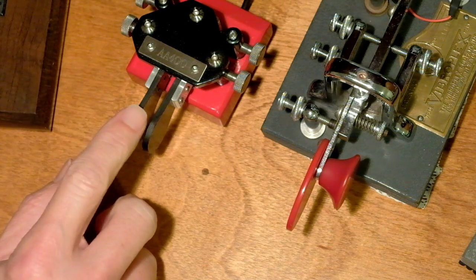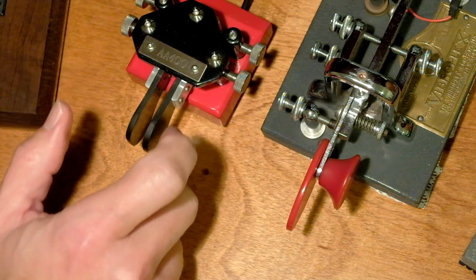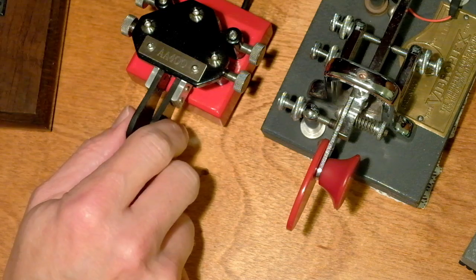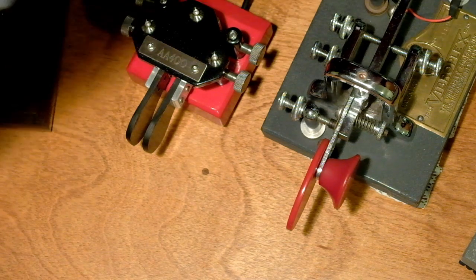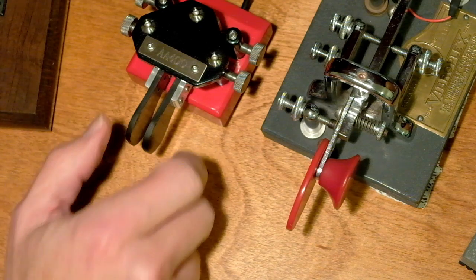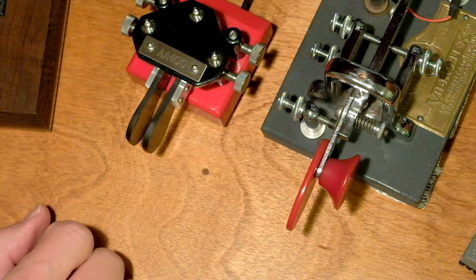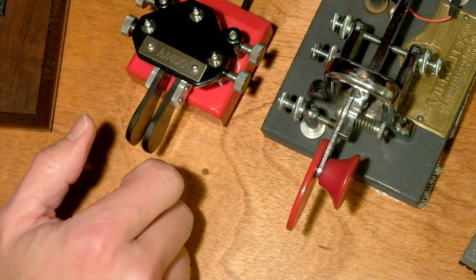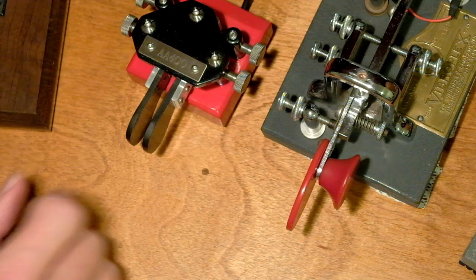And now it's an R. So we've made an R by only squeezing the paddles once. In mode A, to do an R, it requires one extra stroke. Right? Because just letting go doesn't send that extra dit.